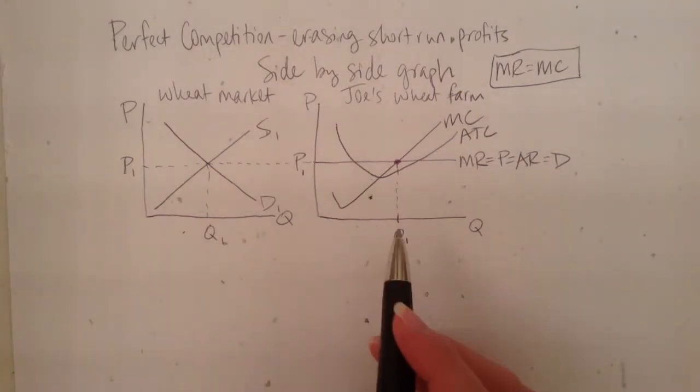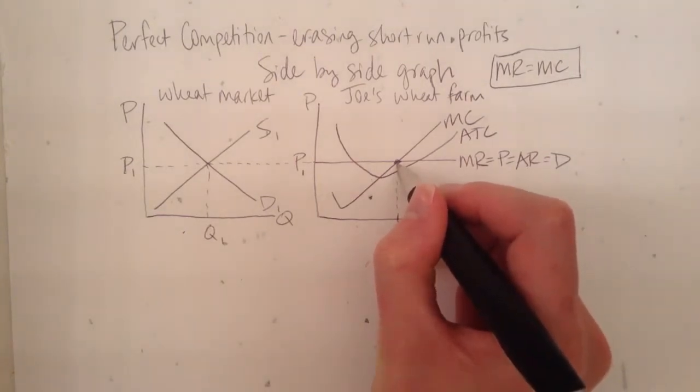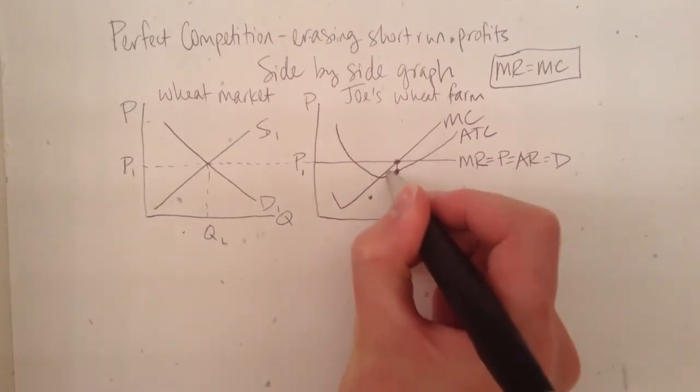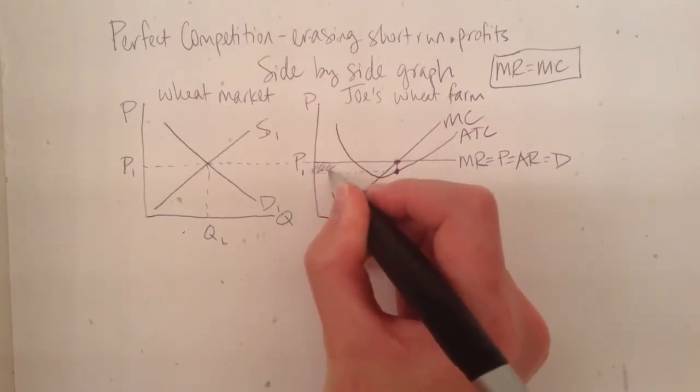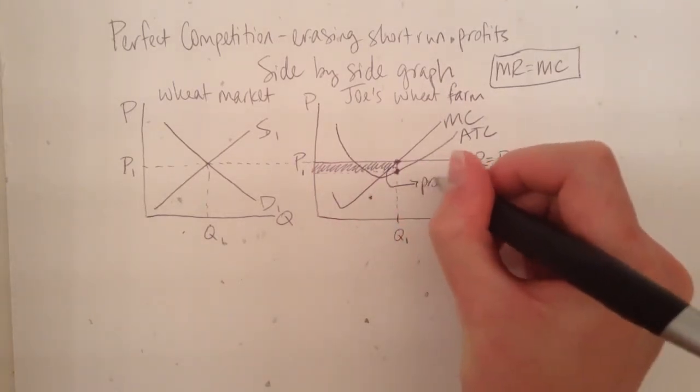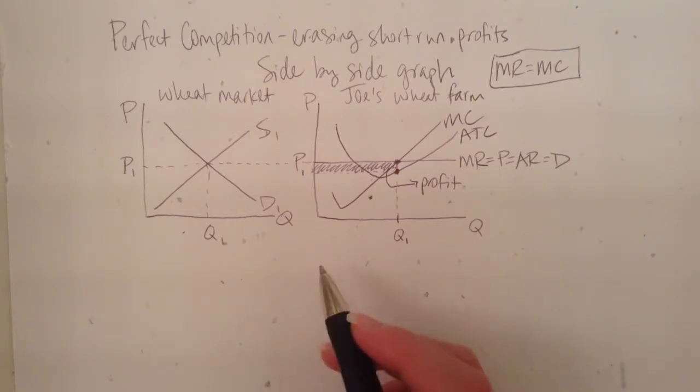However, this is not sustainable in the long run, because like I said earlier, other firms will see this profit. The amount of profit that Joe is earning can be found by looking where the quantity intersects with average total cost, because that is the total cost at the quantity it's producing. And then this rectangle right here that I'm shading in is the region that represents the amount of profit that Joe is earning. And the fact that he's earning any profit at all is going to entice people who are maybe growing other types of crops or people with land or whatever. People who might want to get into the wheat farming business and also earn an economic profit.